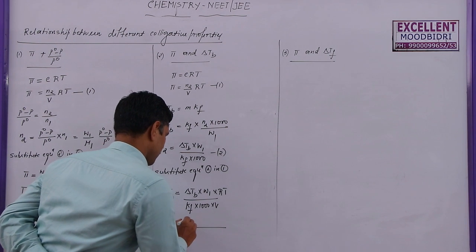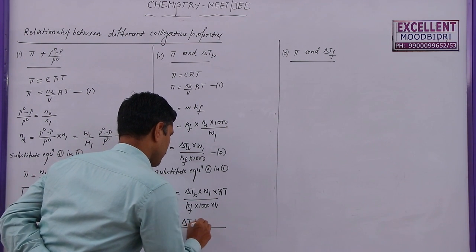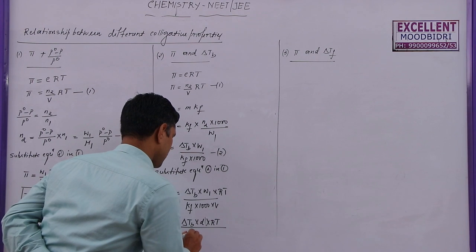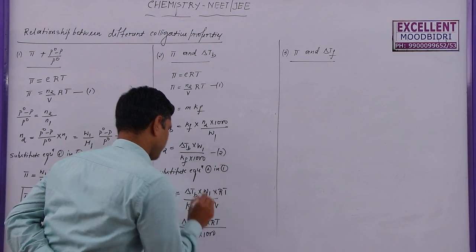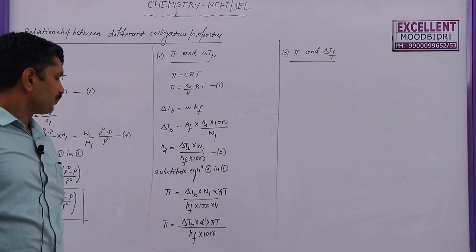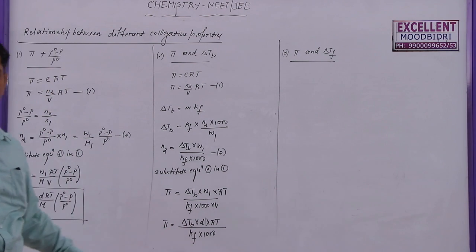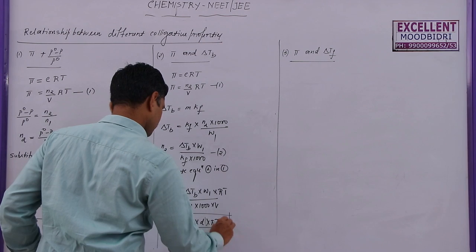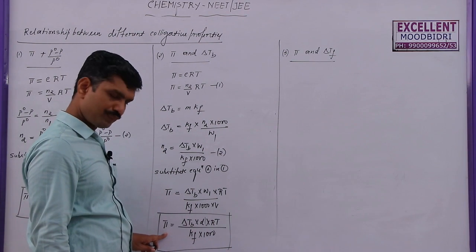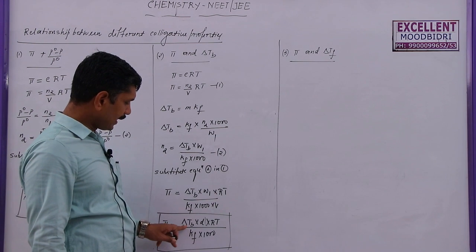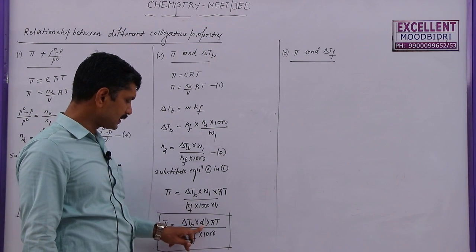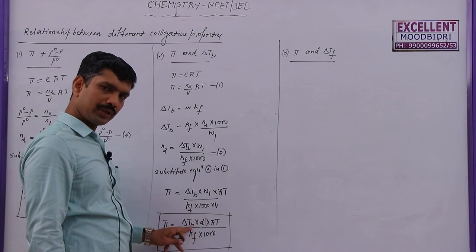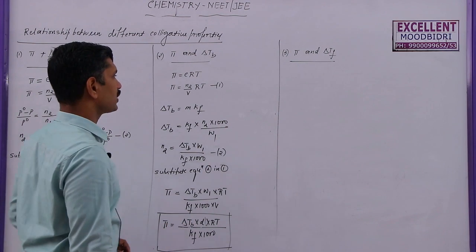Therefore, π = ΔTb × density × R·T / (Kf × 1000). This is the final formula. From this equation, we conclude that since Kf, density, R, and T are all constant for a particular solvent, π is directly proportional to ΔTb. So osmotic pressure is directly proportional to the elevation in boiling point. When the elevation of boiling point changes, the value of π also changes.